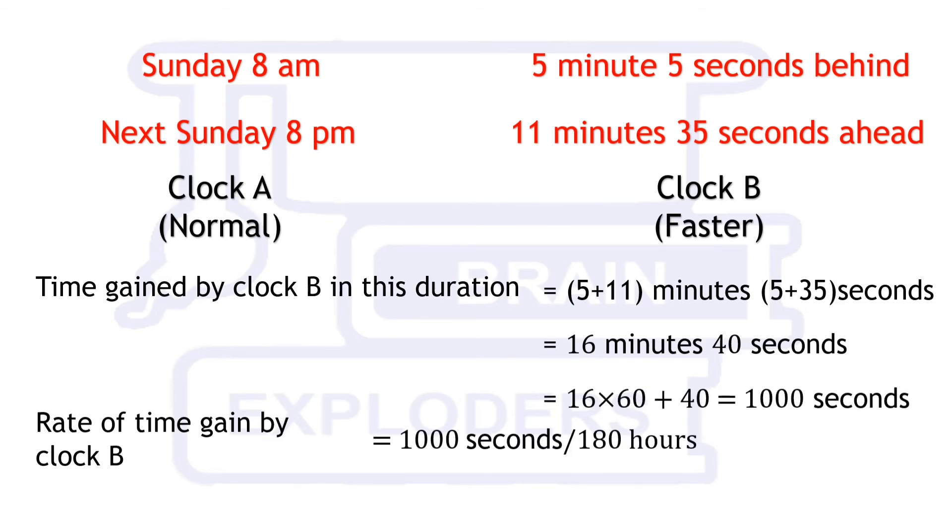Thus, the rate of time gain by clock B is 1000 seconds per 180 hours. You can convert hours to seconds, but there's no need to do this.